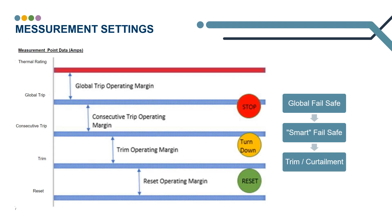So these measurement points — how do they work and what fail safes do we have built in? When designing an A&M, we need to ensure we do not exceed the asset rating or come anywhere close to tripping breakers. Knowing that the thermal rating of the asset is the ultimate limit, our main fail safe is called the global trip, and it's the value where all A&M generation will be tripped off. This value is set slightly below the asset rating to avoid any overloads.